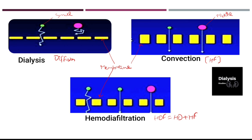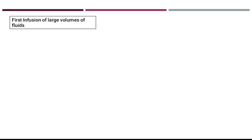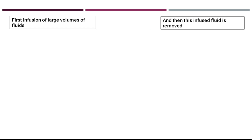In hemodiafiltration, both diffusion and hemofiltration occur together. Small and large molecules are removed by convection. Molecules are removed both via diffusion and convection, so solute clearance here is quite excellent.